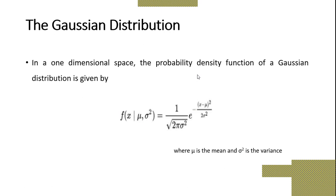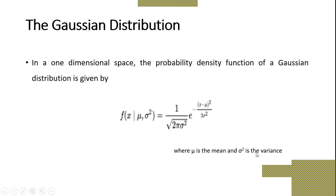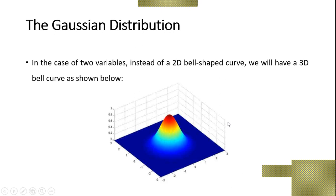In a one-dimensional space, the probability density function of the Gaussian distribution is given by f(x; mu, alpha squared) equals 1 divided by the square root of 2 pi alpha squared, times e to the power of negative (x minus mu) squared divided by 2 alpha squared, where mu is the mean and alpha is the variance. The mu indicates the mean value and alpha squared indicates the variance.